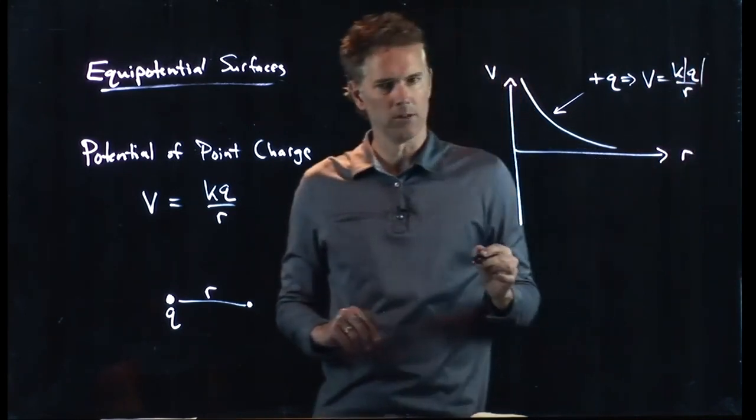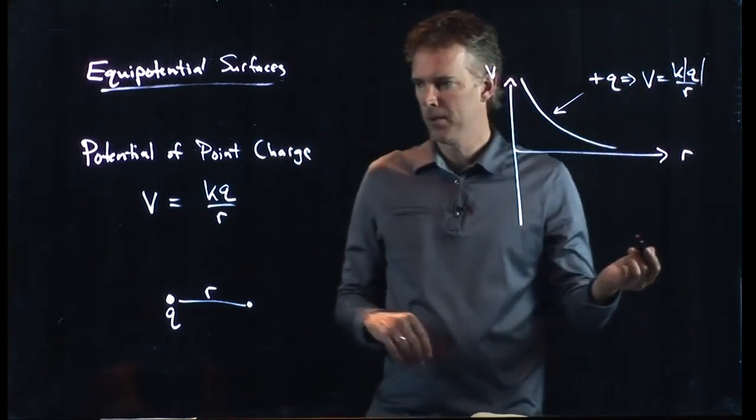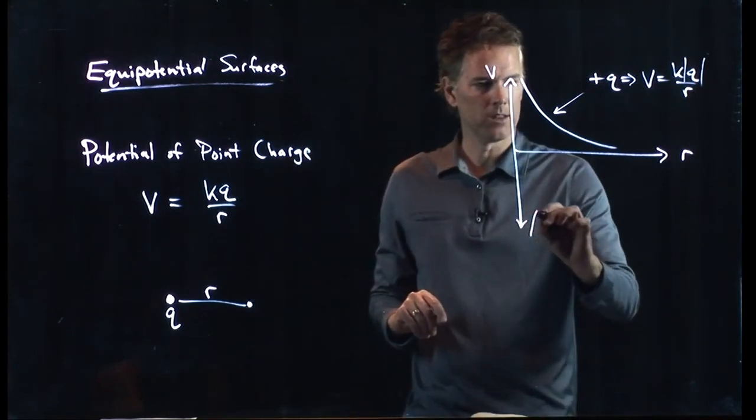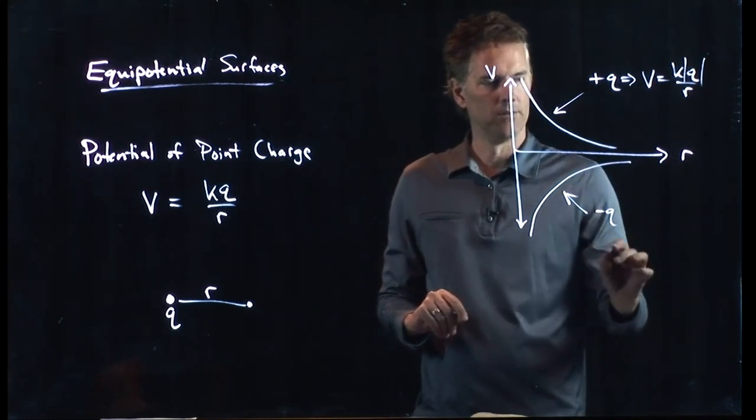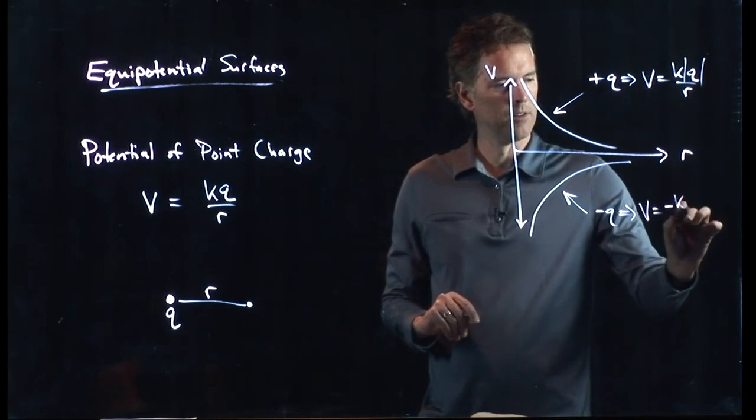And we'll put the Q in magnitudes there, because if it's a negative charge, then the potential becomes negative. And so now it looks like this. That's a minus Q. V is equal to minus KQ over R.